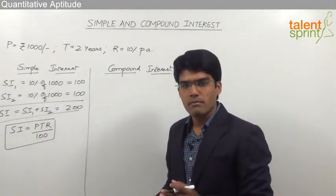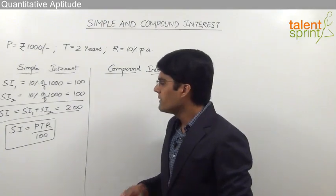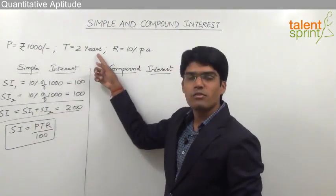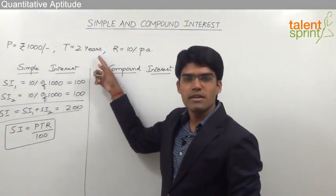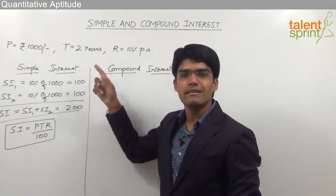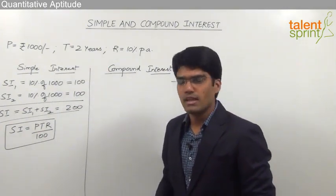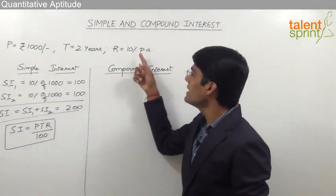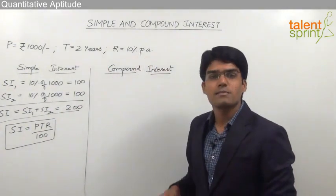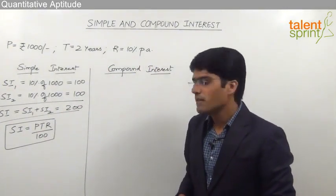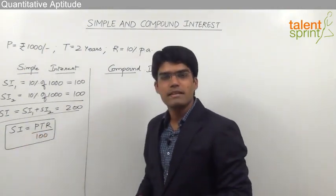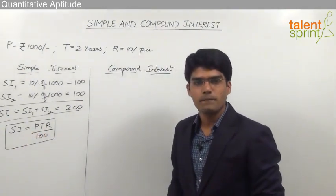Remember, whenever we use the formula, time should always be in terms of years and the rate of interest should always be in percentage per annum. Simple interest can be taken as PTR/100.